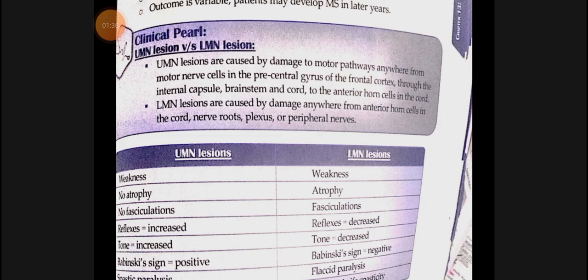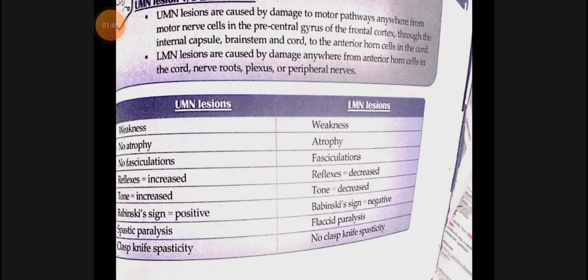Upper motor neuron lesion signs and lower motor neuron lesion signs are different. In UMN lesion, everything is increased: reflexes increase (knee reflex, ankle reflexes, biceps reflexes, all tendon reflexes), muscle tone increases, Babinski's sign is positive (stroke sole of foot, it's positive), and paralysis is spastic. These four things are the main signs of UMN lesion.